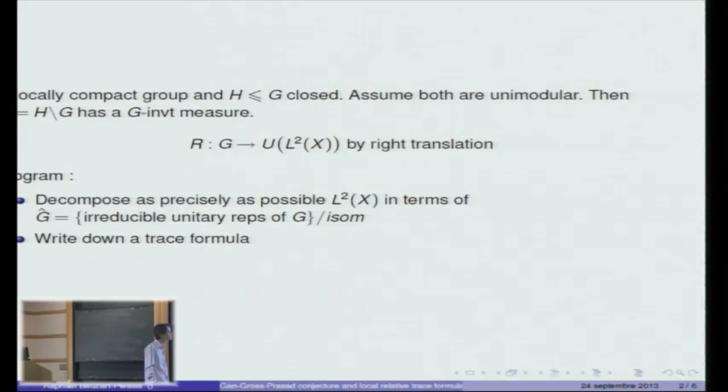I will denote by X which is G invariant and unique up to a scalar, and so we can speak of the L2 space of X. We have a natural action of G on that space which is given by right translation, and in fact it is a unitary representation of G I denote by R. I want to speak about two main problems about such representations: first, to decompose as precisely as possible the space L2 of X in terms of irreducible unitary representations of G.